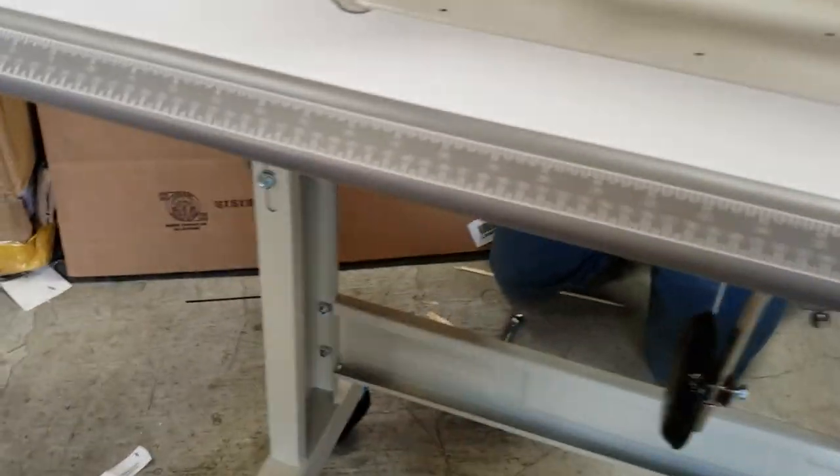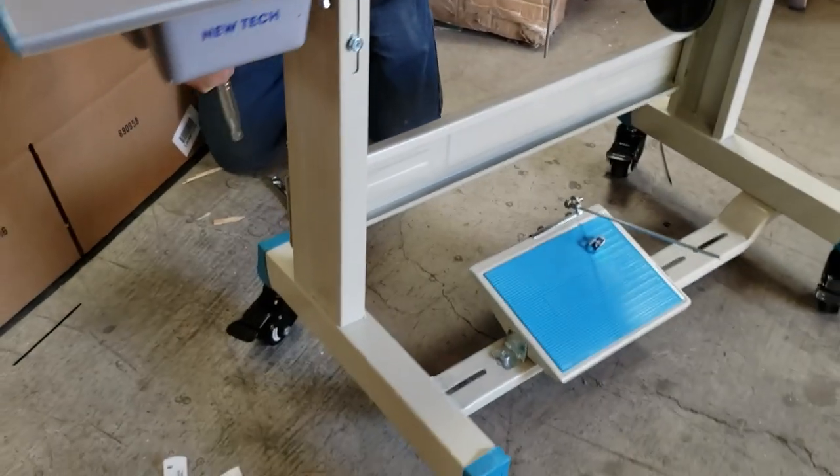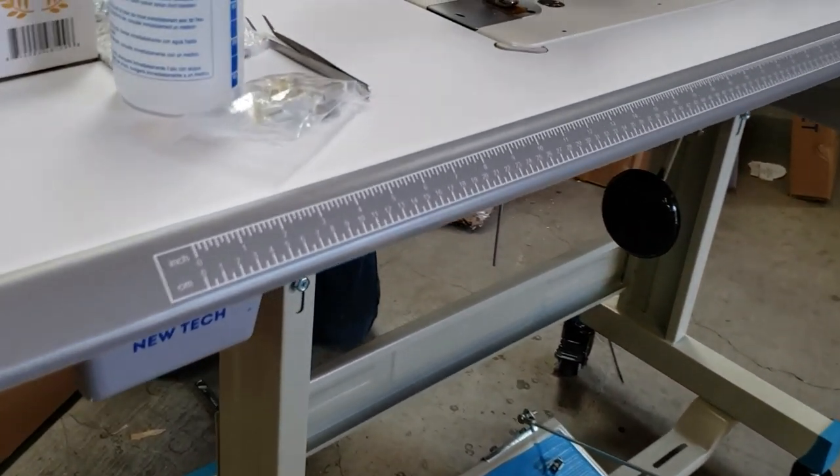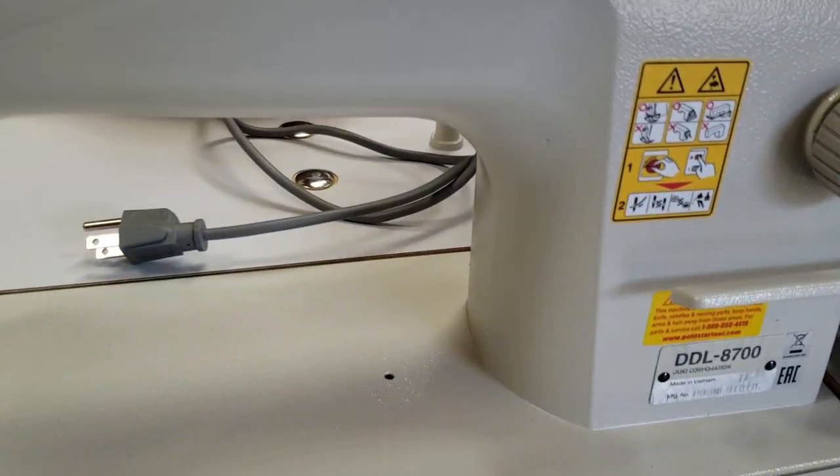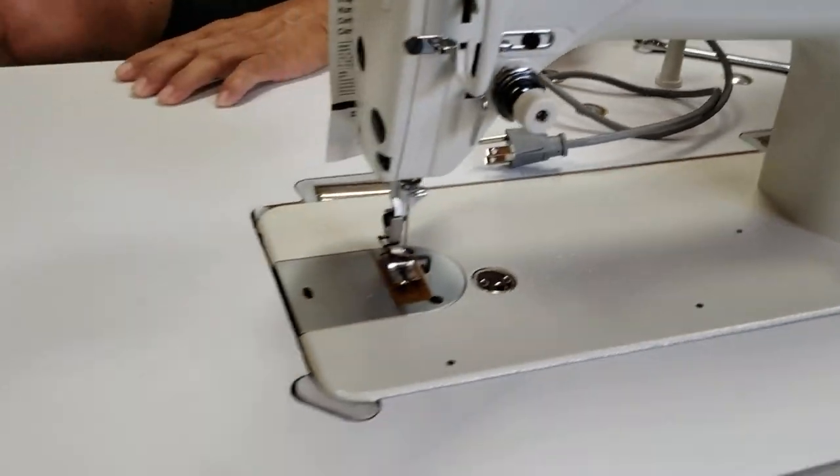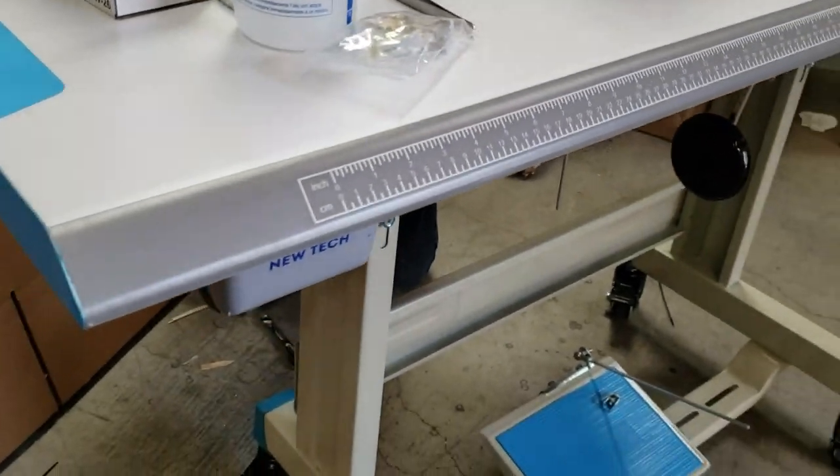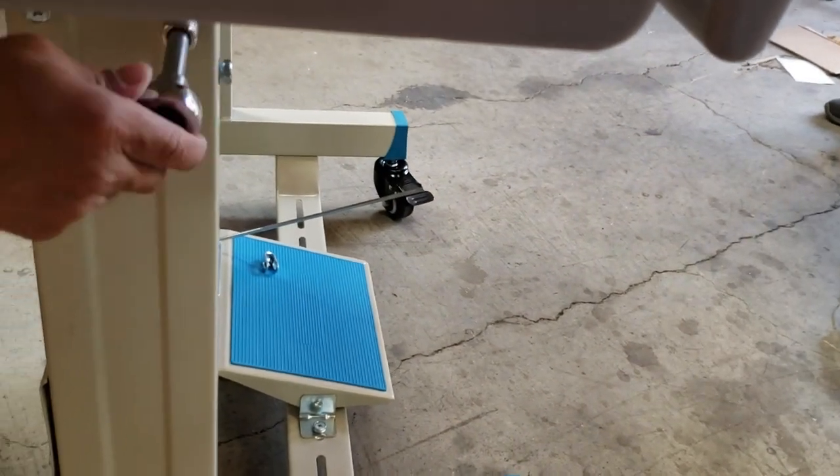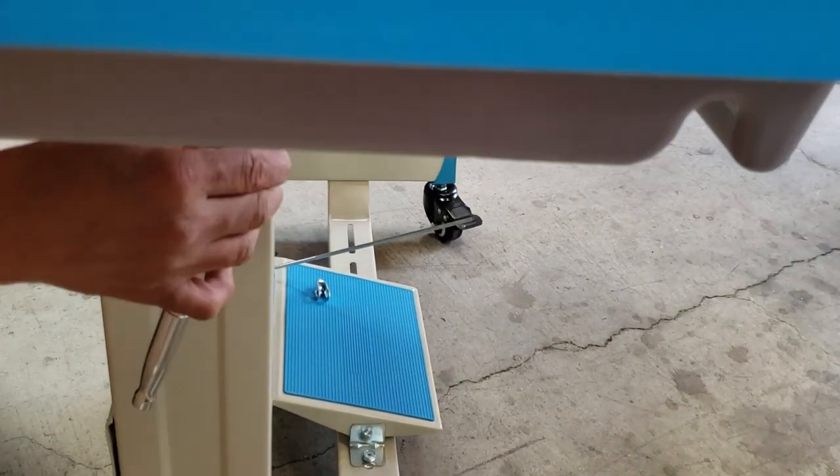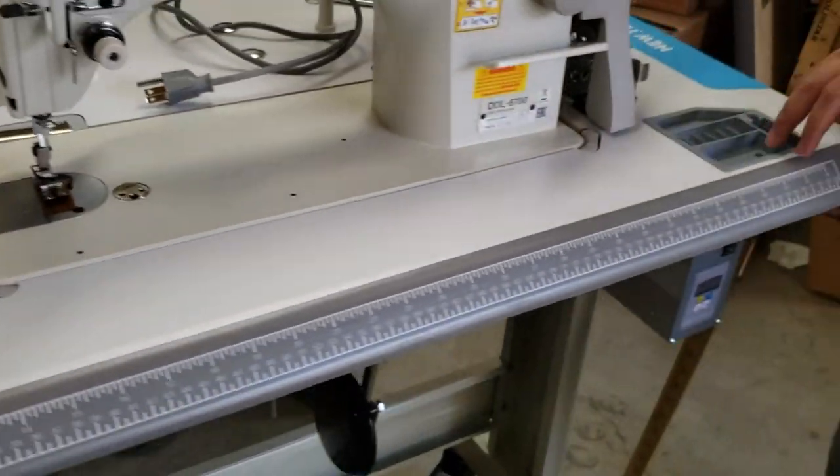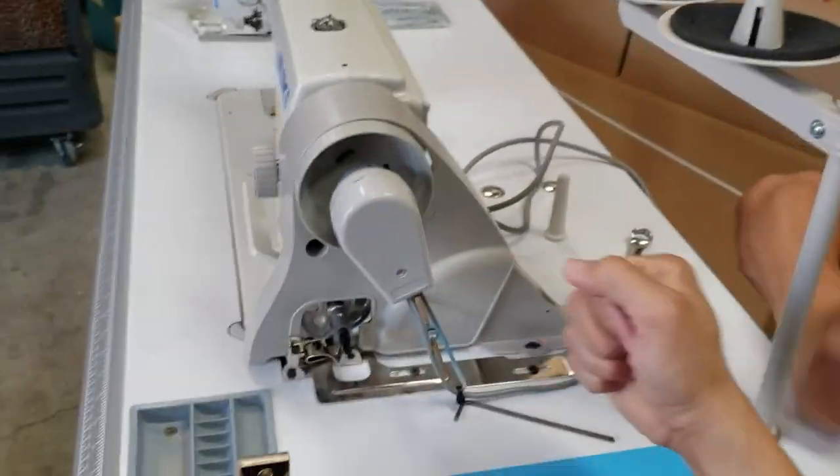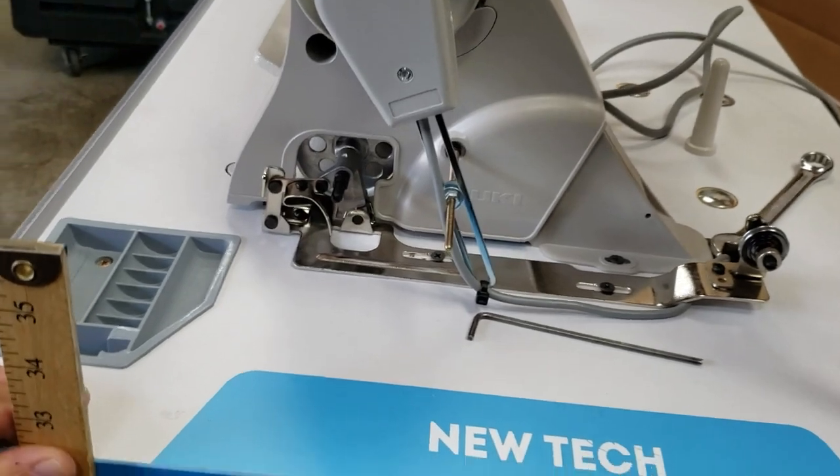Again, this is a T-Leg table with wheels by NewTek, and the machine is DDL 8700. It doesn't really matter what type of machine it is, just the way you do it. So now we're going to do this side too.